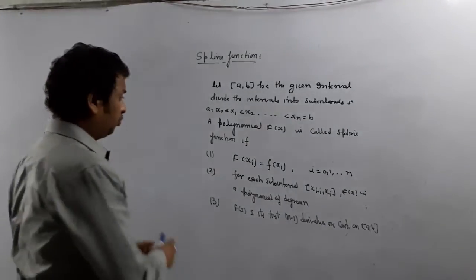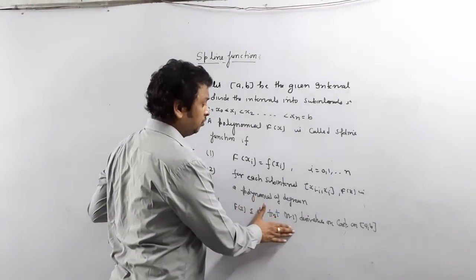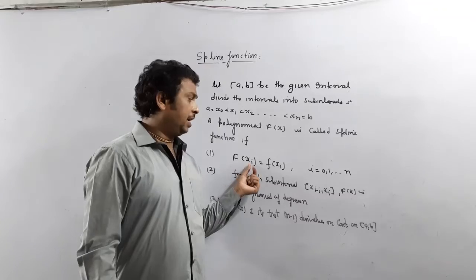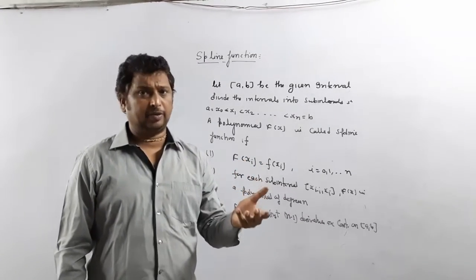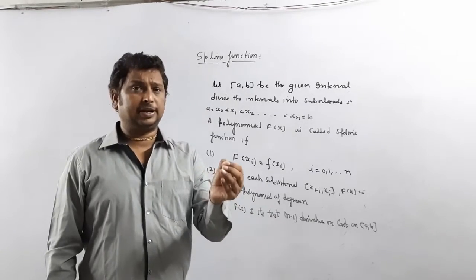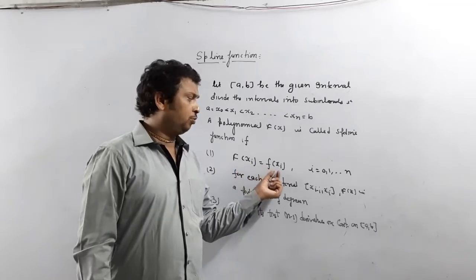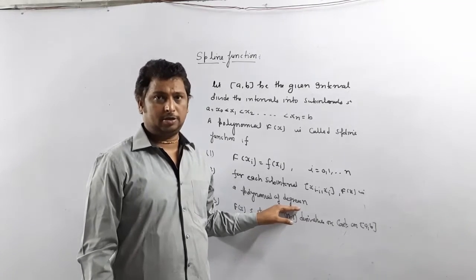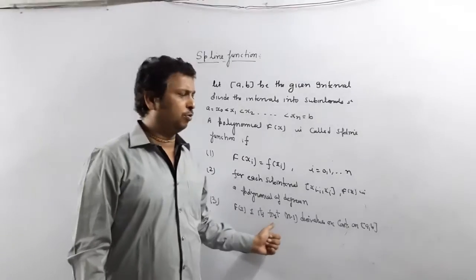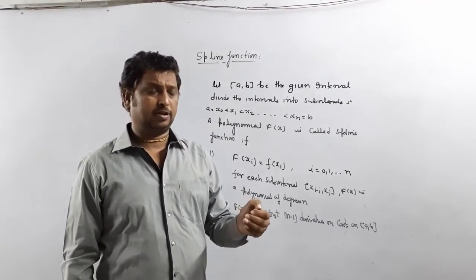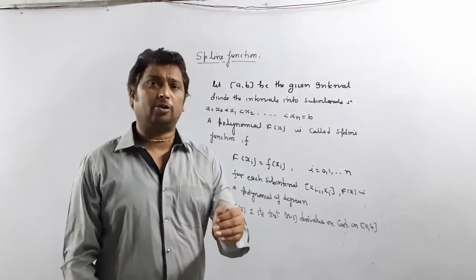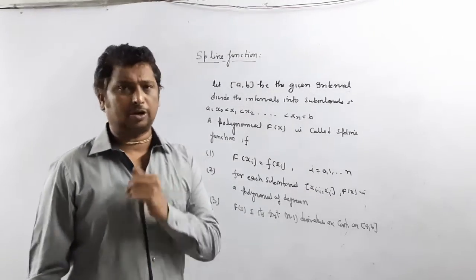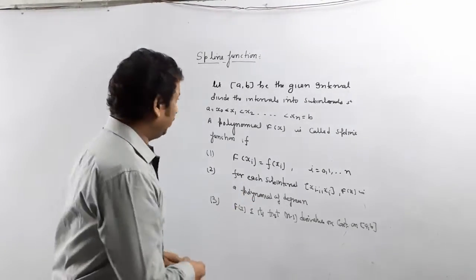If any function fx satisfies these three properties, it is called a spline function. For a spline function, you have to verify that fx and its first n-1 derivatives are all continuous. If a question gives you a function and asks you to check if it's a spline or not, verify it's a polynomial of degree n for each sub-interval, then check continuity of fx, f'(x), f''(x), and so on. After that, we will go for cubic spline — let's do one example.